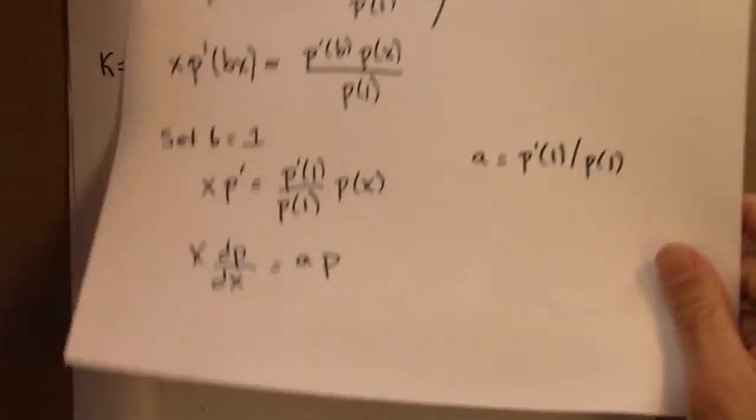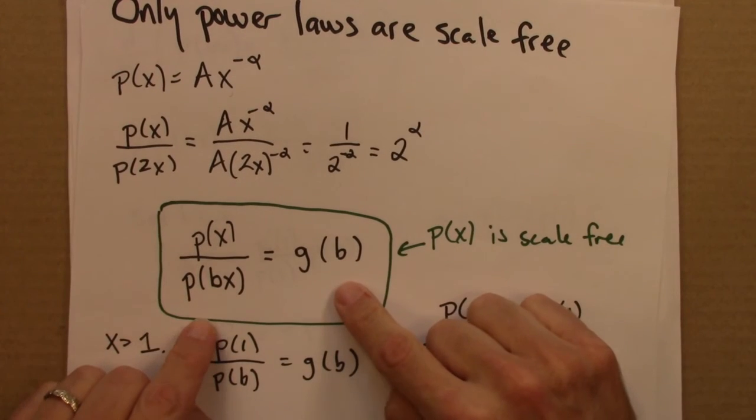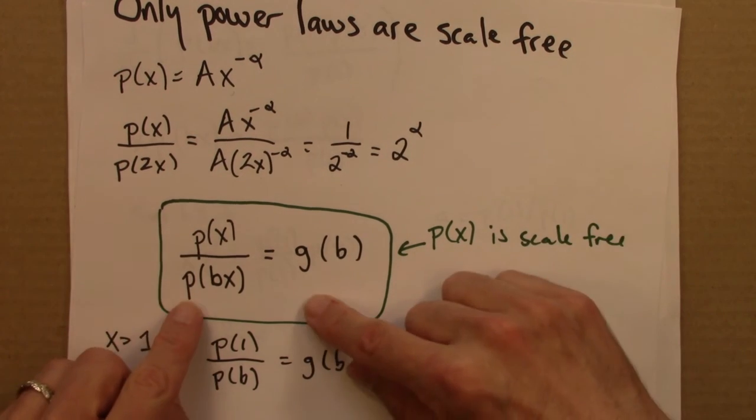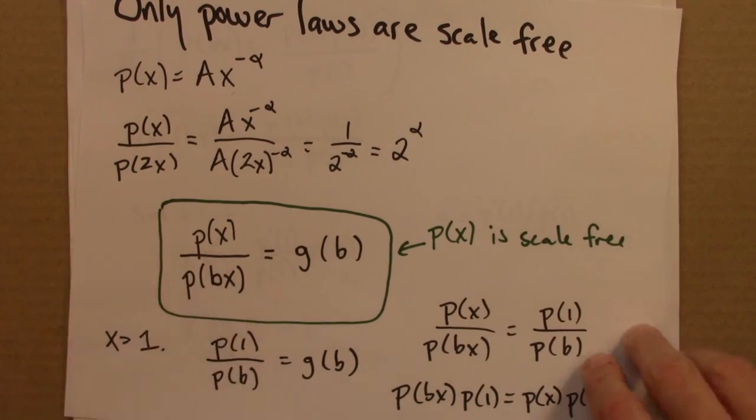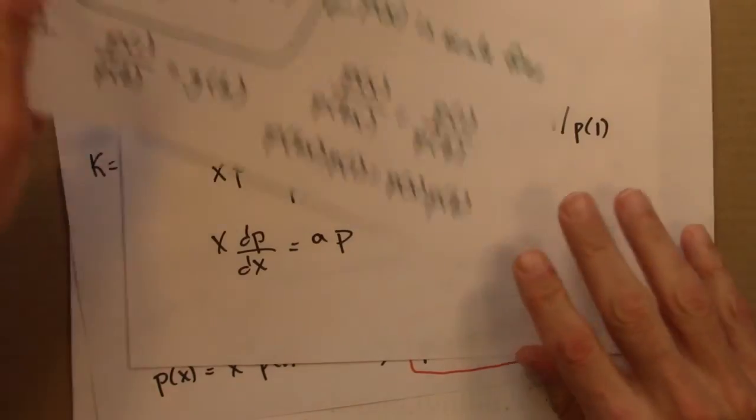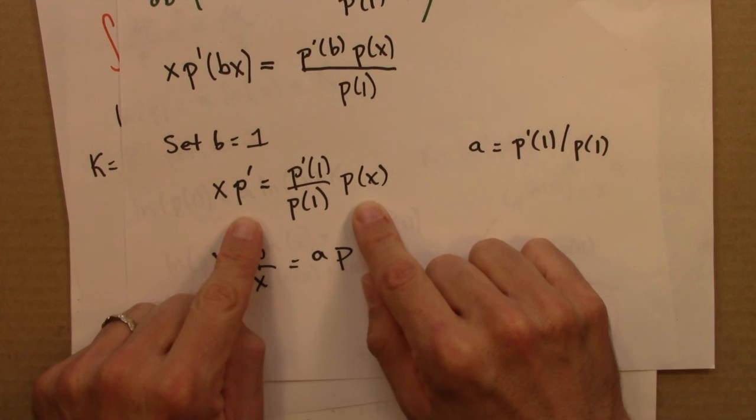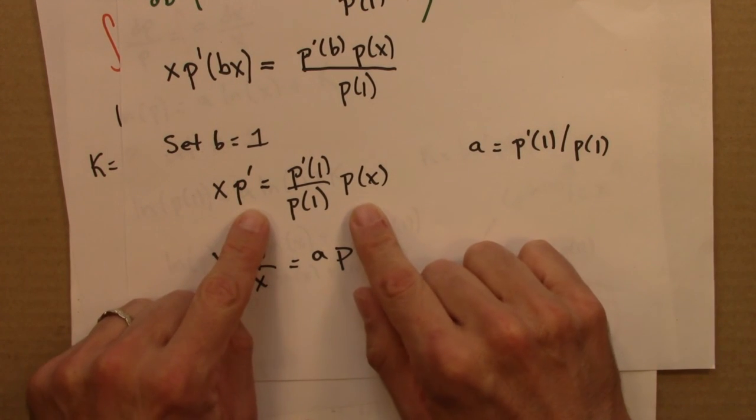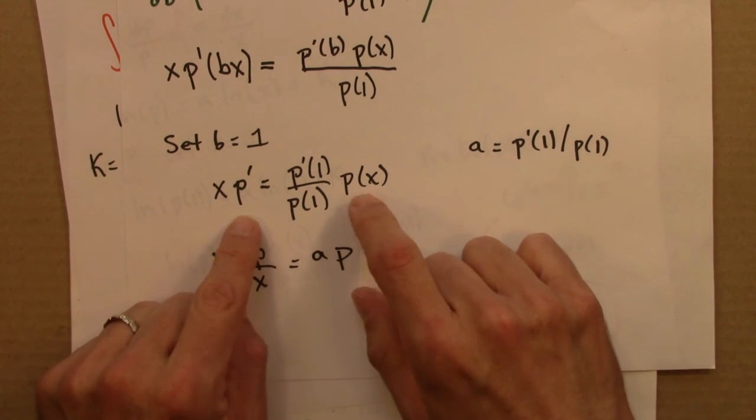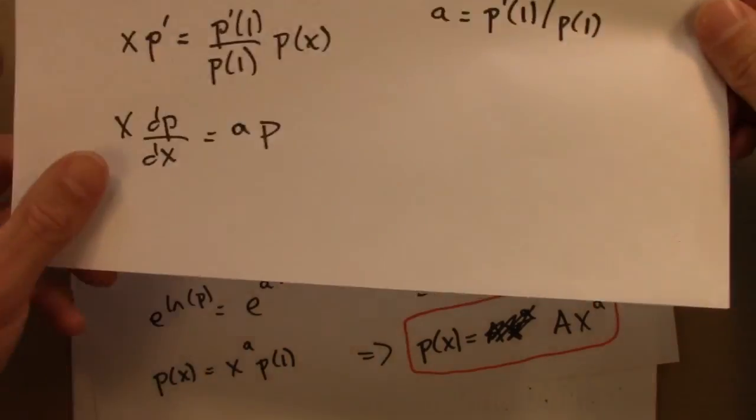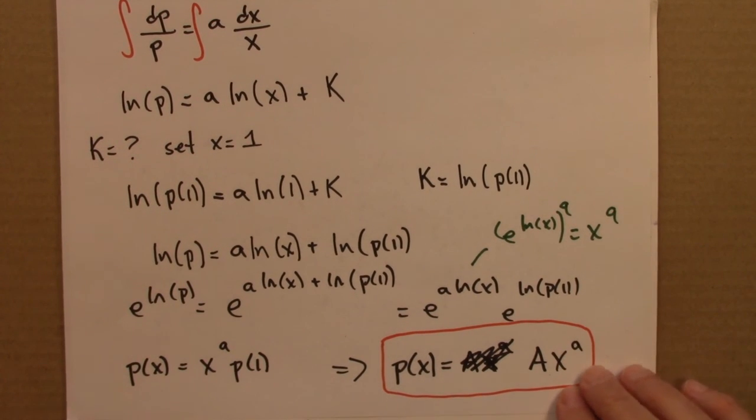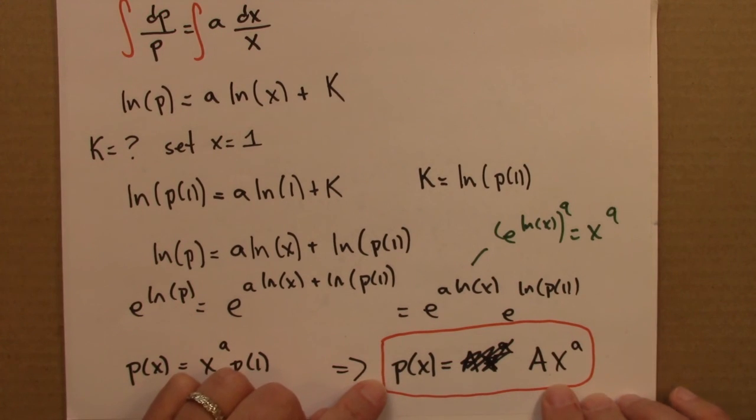So to recap really quickly. We said this equation is what it means for the function P of x to be scale free. So then we said, let's do some math on this and see what that tells us about P. And what we did was, we ended up with this differential equation. That differential equation is a well-posed differential equation. And there's theories that says that in fact this solution is unique. So there's only one solution to this equation. And that one and only one solution happens to be a power law. So what we've shown is that if a function exhibits scaling is self-similar, it has to be a power law. So only power laws are self-similar.